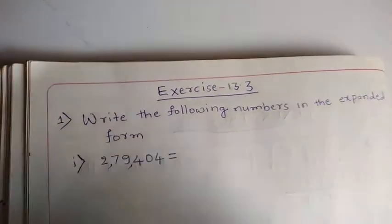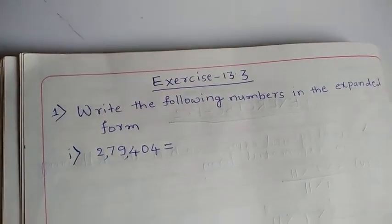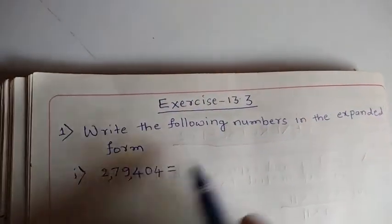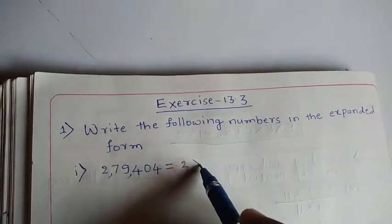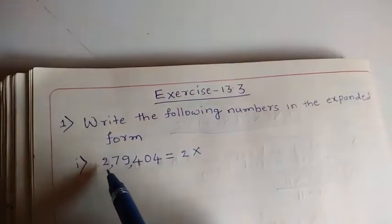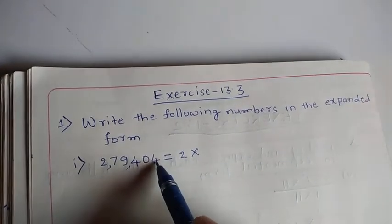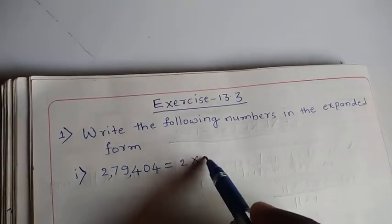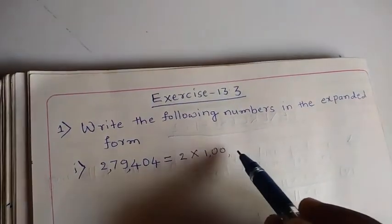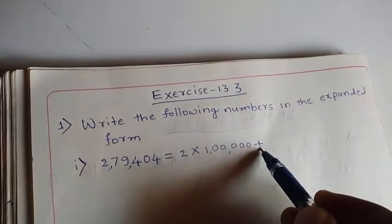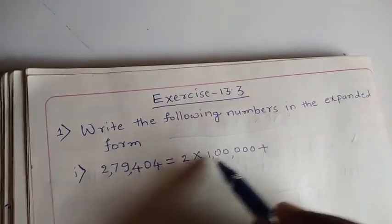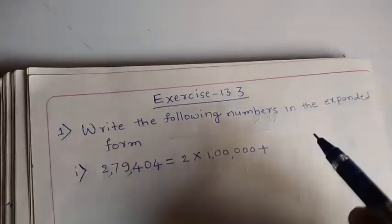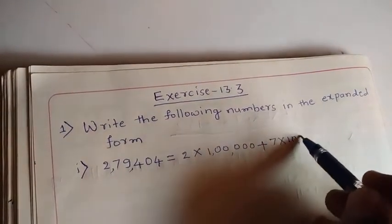In the first step, we write all the digits in place value form. Two comes in which place? Two comes in the one lakh place — so two into one lakh. Next, put the plus sign. Seven comes in which place? Ten thousand — so seven into ten thousand.